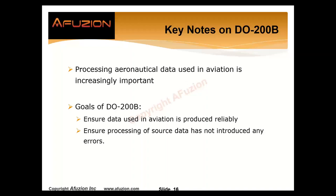Some keynotes on DO-200B: this aeronautical data is increasingly important. A big manufacturer of avionics data processing and flight planning was recently hacked — malware. There are cybersecurity rules; that's DO-326. The data processing was hacked, which affected pilots, airlines, and air crews' ability to create flight plans and dispatch aircraft. In this interconnected world, data is the value, the differentiator. We need to make sure that data used in aviation — ground, air, processing, dispatch — is produced reliably.